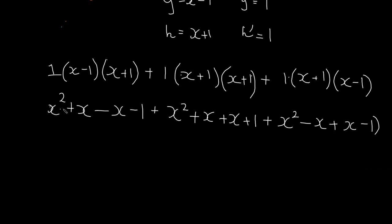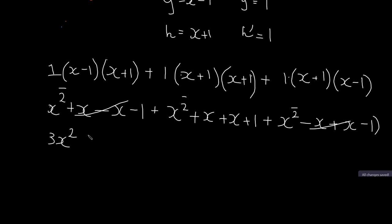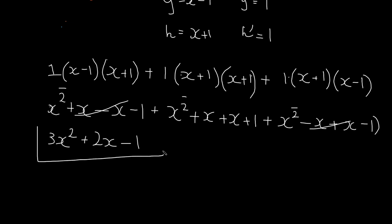Now we collect like terms. For x squared we have 3 of them, giving 3x². For the x terms: two x's cancel here, 2x remain from the second bracket, and two x's cancel in the third — leaving 2x total. For the constants: negative 1 plus 1 minus 1 gives negative 1. So the final solution is 3x² + 2x − 1.